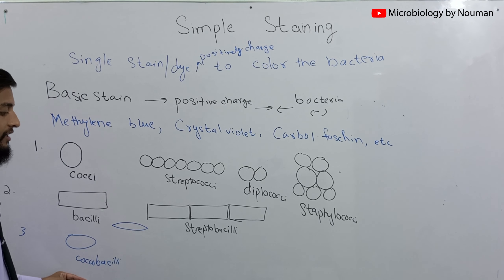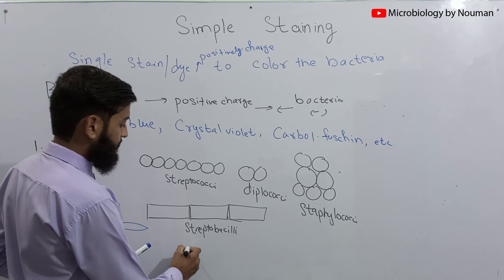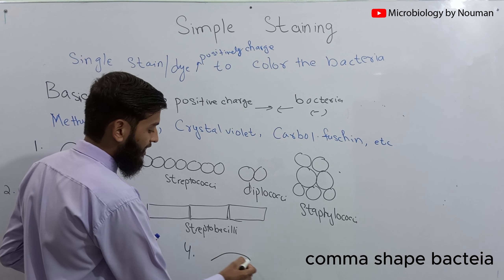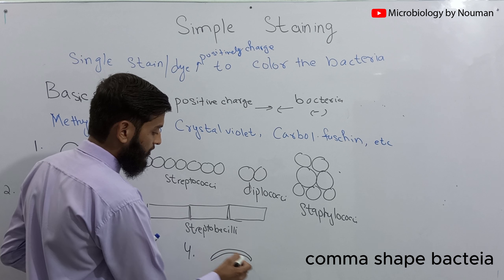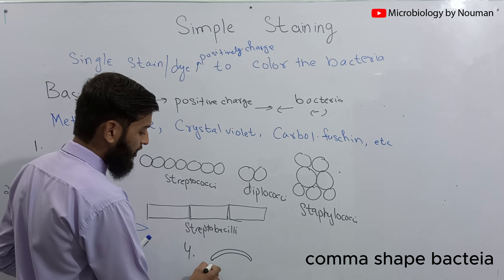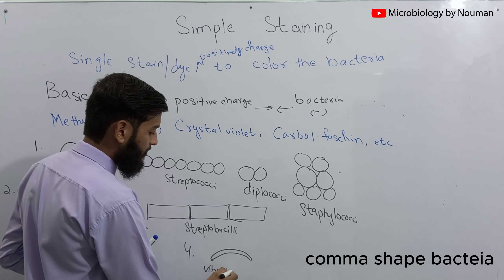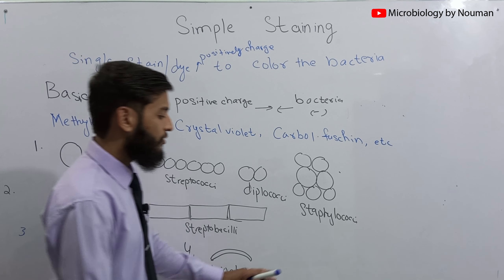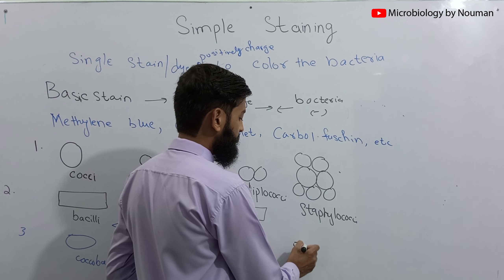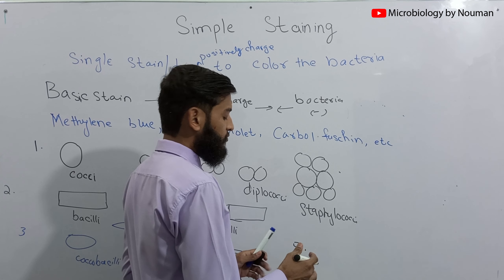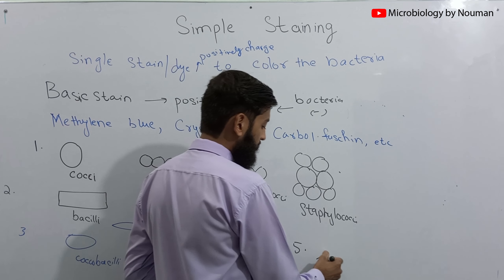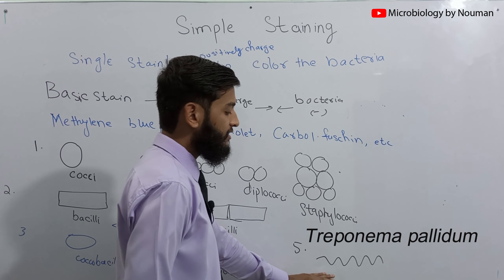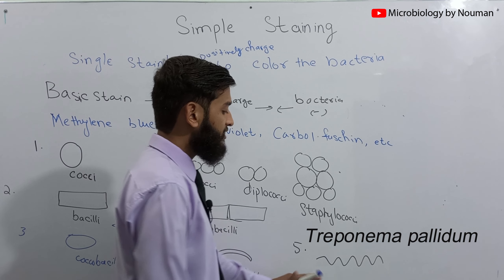The fourth possibility could be comma-shaped bacteria — an example is Vibrio cholerae. Bacteria could also be seen as spiral-shaped or helical-shaped. Treponema pallidum is an example of a spiral-shaped bacterium.